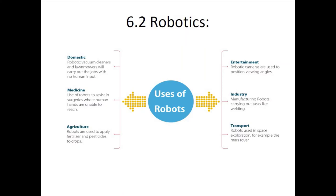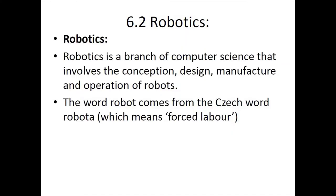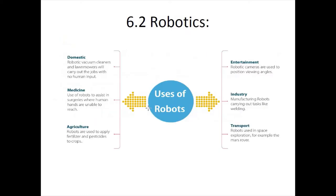The first thing you need to know after the definition of a robot is the uses of robots. In domestic life or homes, robotic vacuum cleaners such as Roomba are used to carry out cleaning jobs without any human input. In medicine, robots are used to assist in surgeries where human hands are unable to reach. In agriculture, they are used to apply fertilizers and pesticides on crops.